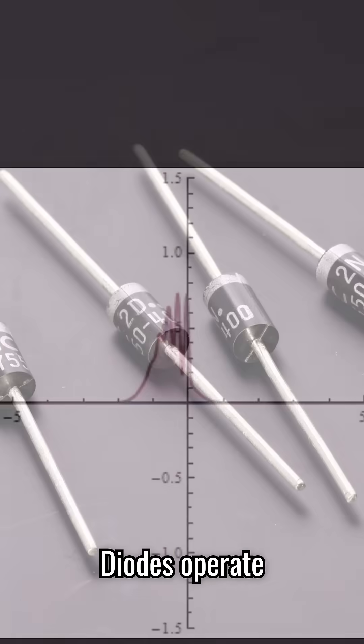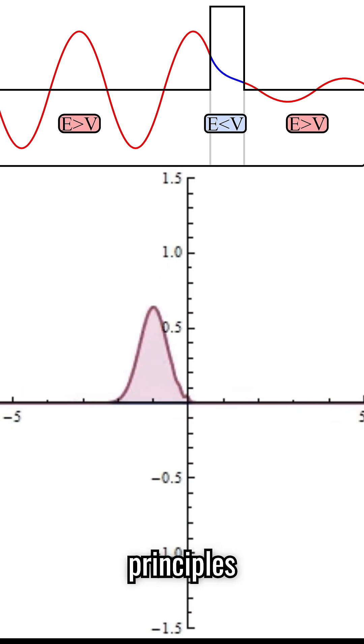But how does a diode work? Diodes operate on quantum mechanics principles, where electrons tunnel through energy barriers.